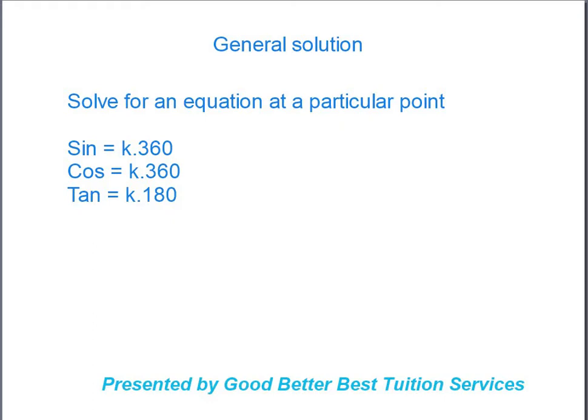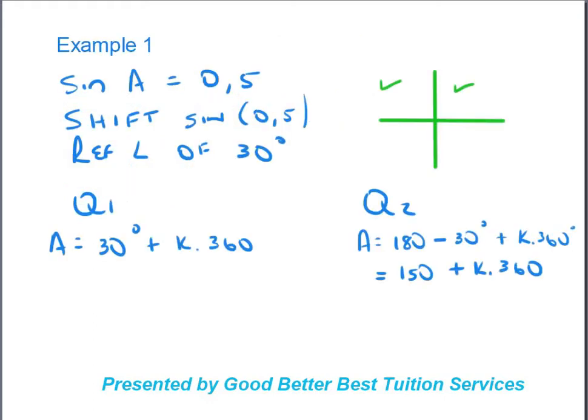Say I ask you to work out sin(a) = 0.5. On your calculator you type shift-sine then 0.5, and you'll see that gives you a reference angle of 30°. The question you ask yourself is: where is sine positive? Looking at the diagram, sine is positive in the first quadrant and in the second quadrant.